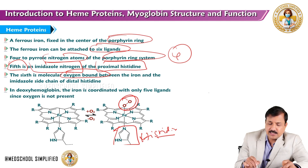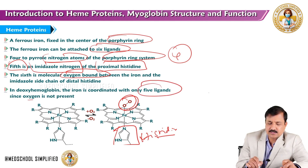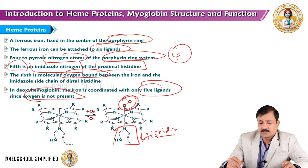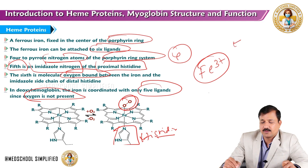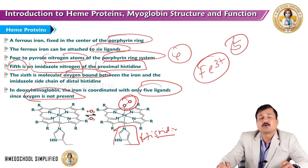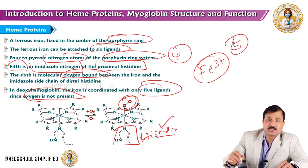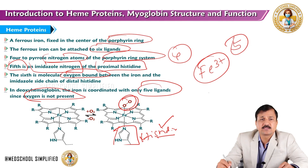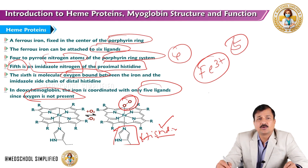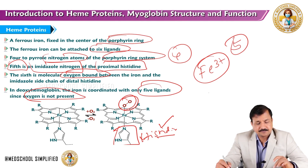In deoxyhemoglobin, the iron is coordinated with only five ligands since oxygen is not present. This is because Fe3+, the ferric form of iron, has only five valencies — four satisfied by the four nitrogens of the porphyrin ring and the fifth by histidine. There is no sixth valency to bind with oxygen, which is why deoxyhemoglobin does not carry oxygen.